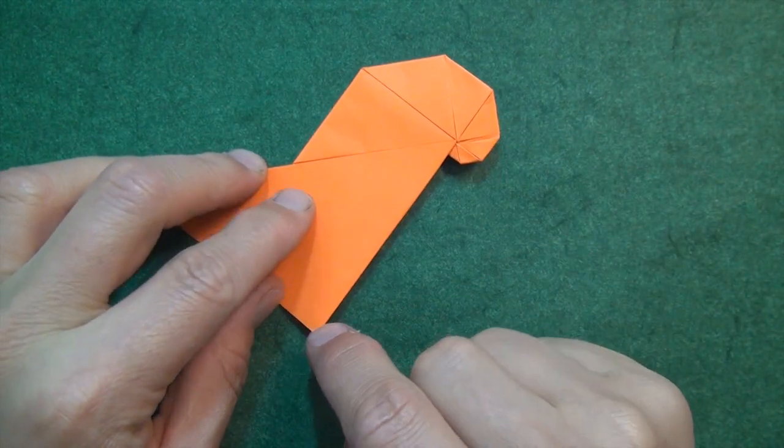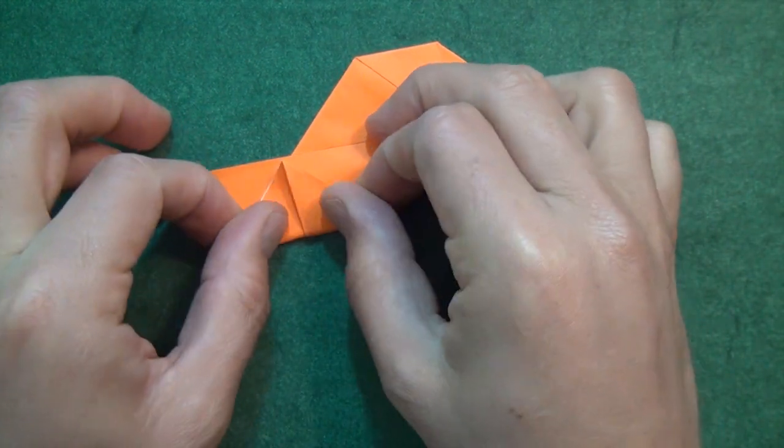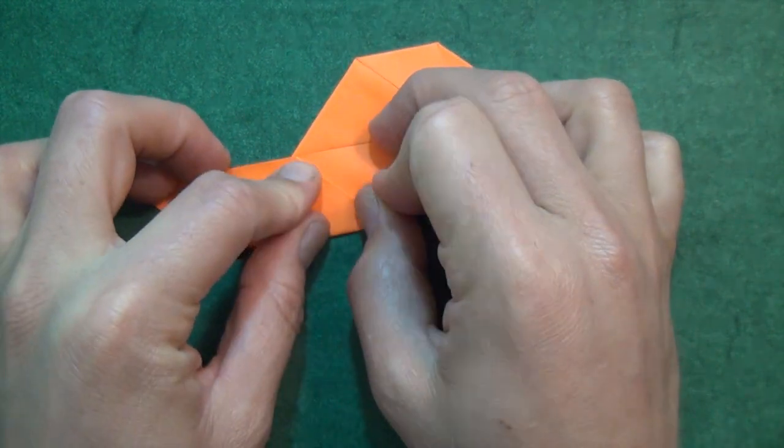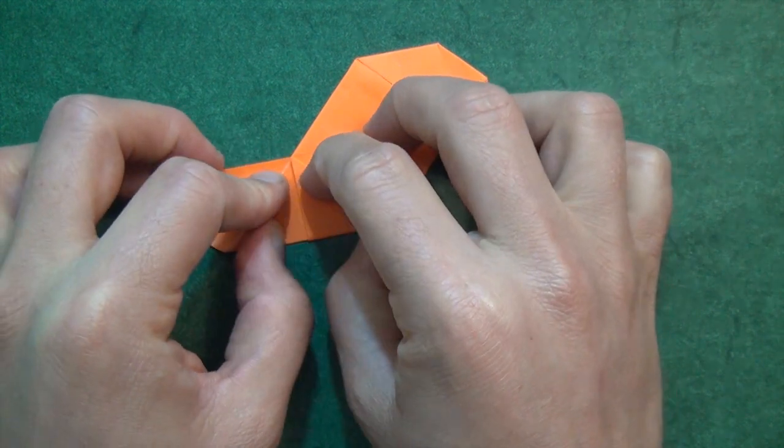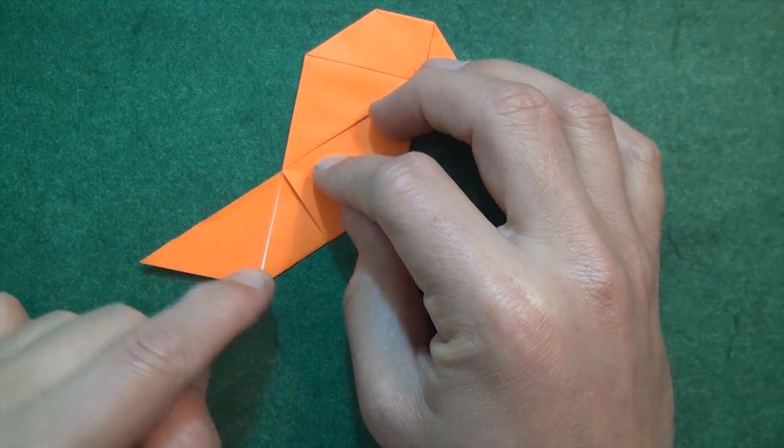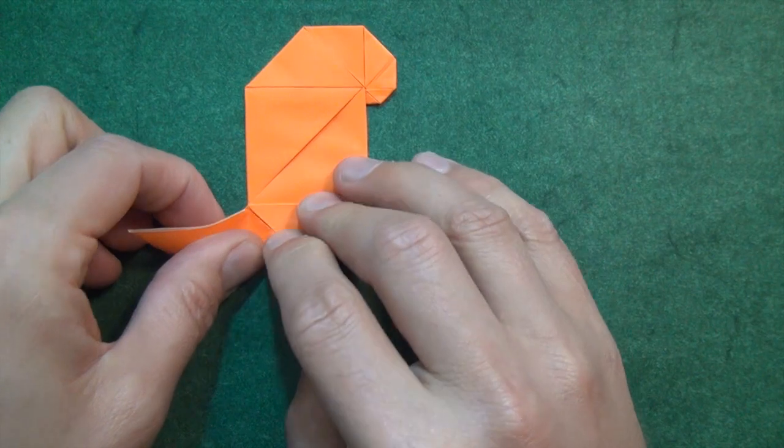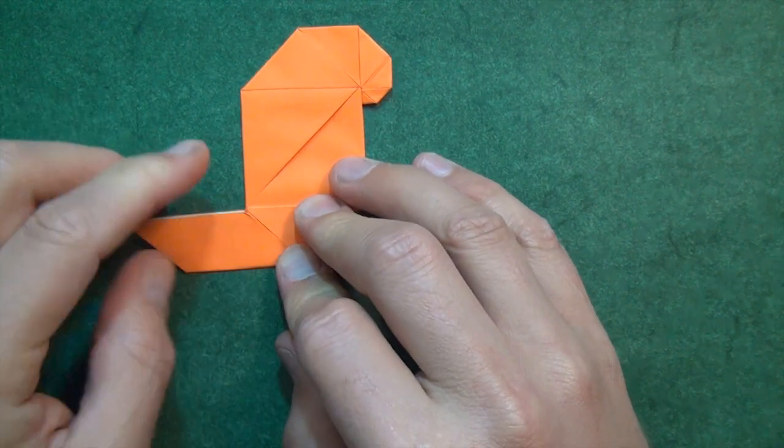Now we're going to take this corner and fold it to right here. And let's take this corner and fold it to here. And just continue the same sort of process.